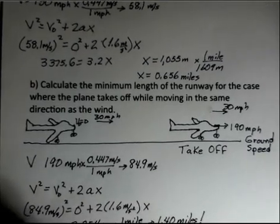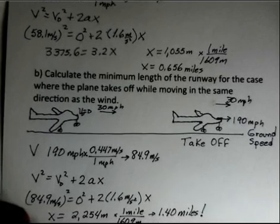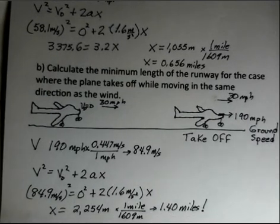And insert the numbers. You should do this on your own calculator. Perhaps pause here. Your calculator hopefully will show 2,254 meters, rounding off a little bit. Converting to miles again. And now I come up with 1.4 miles.